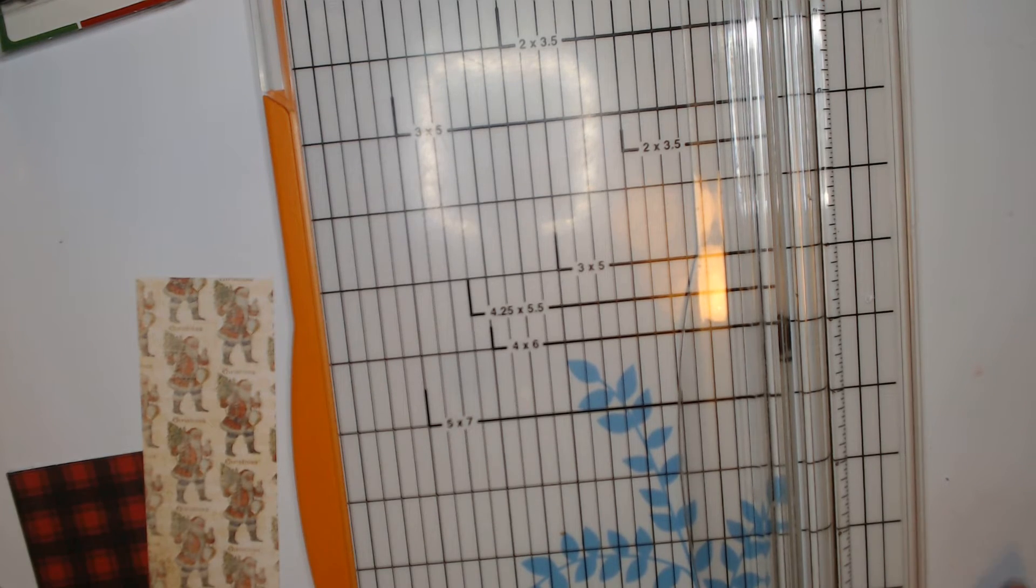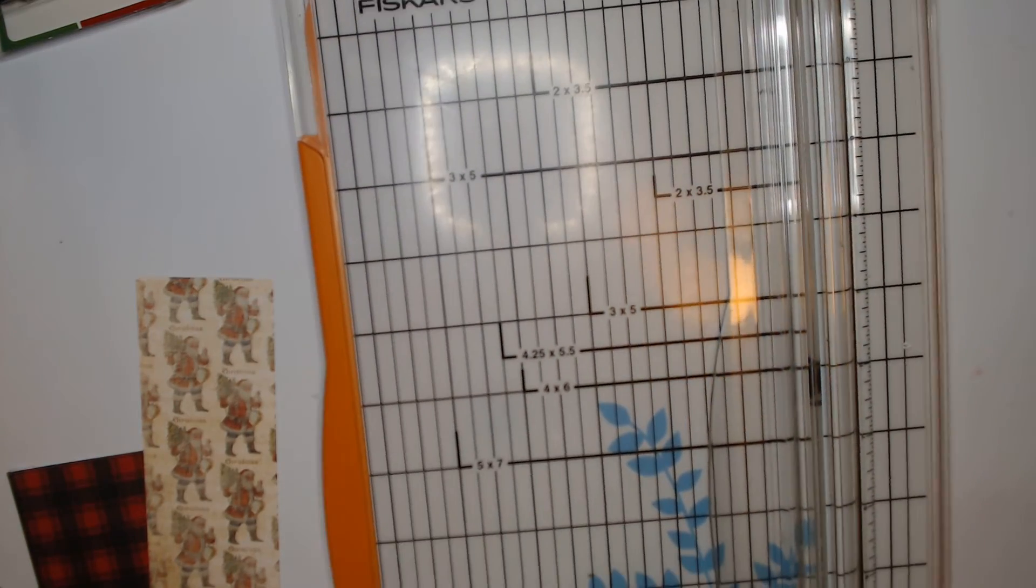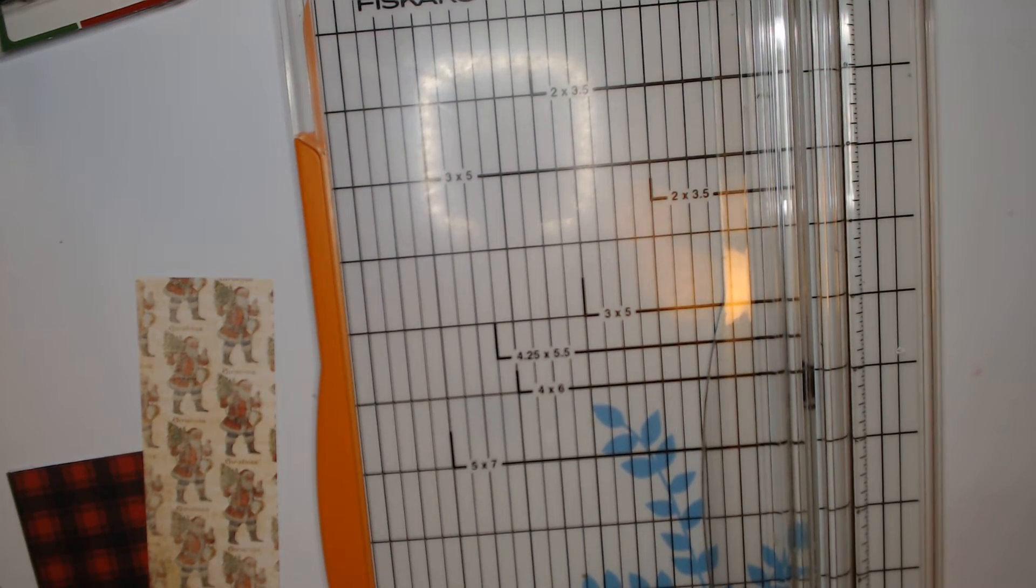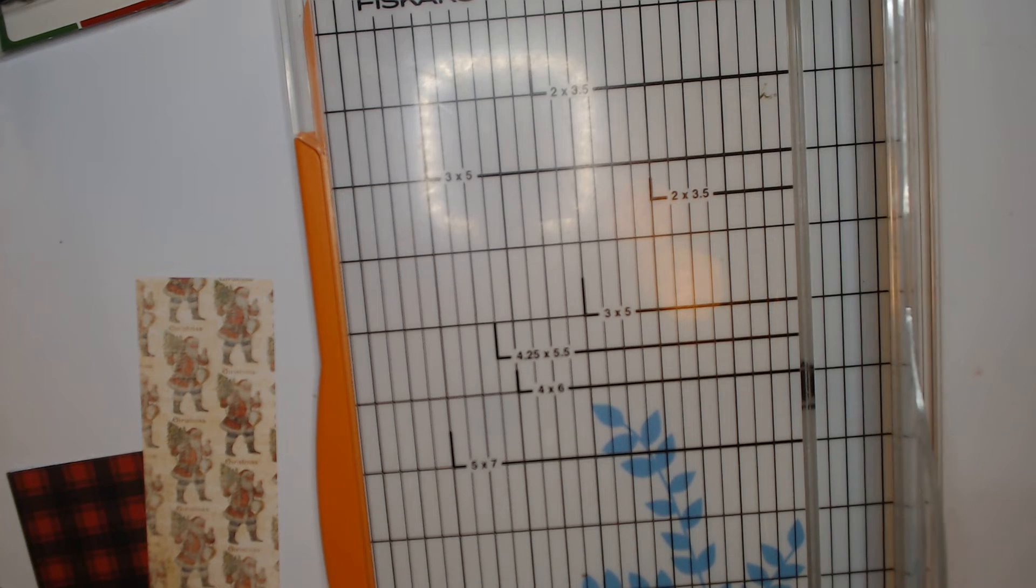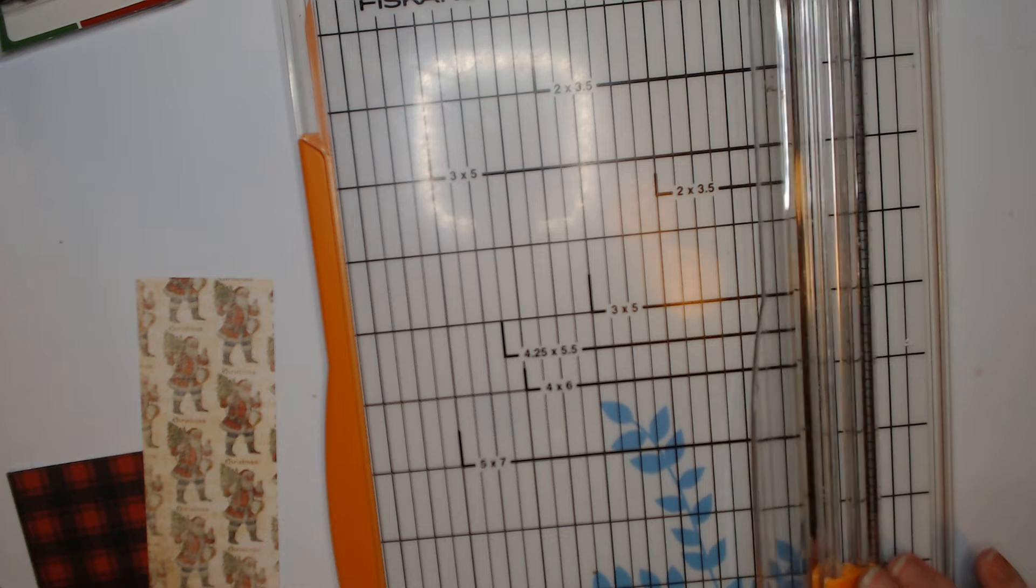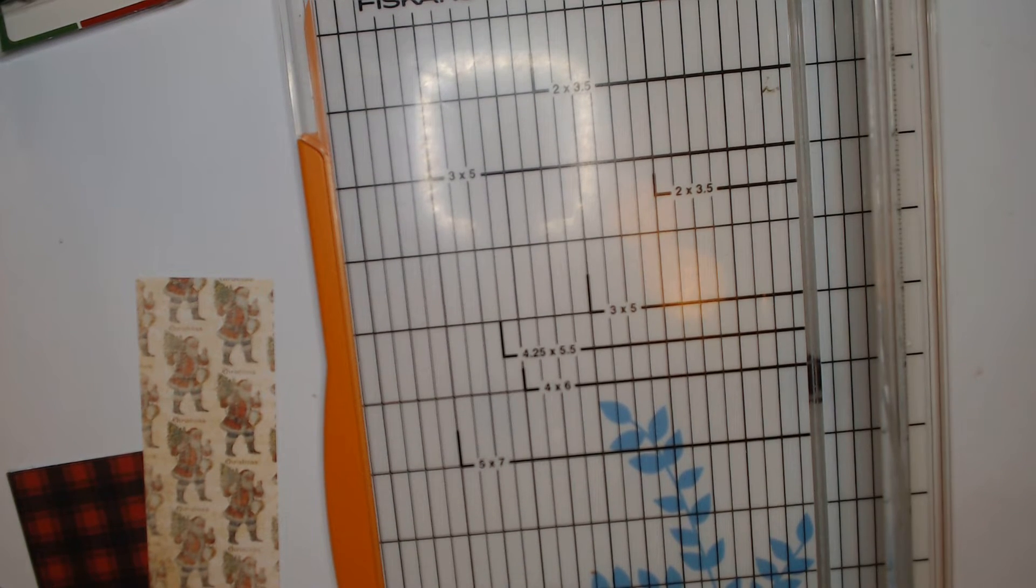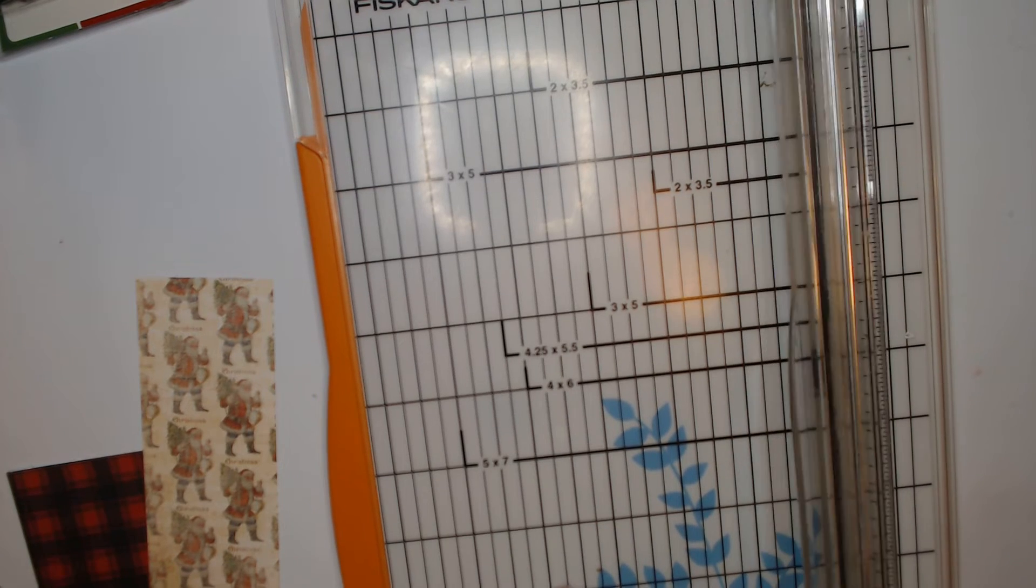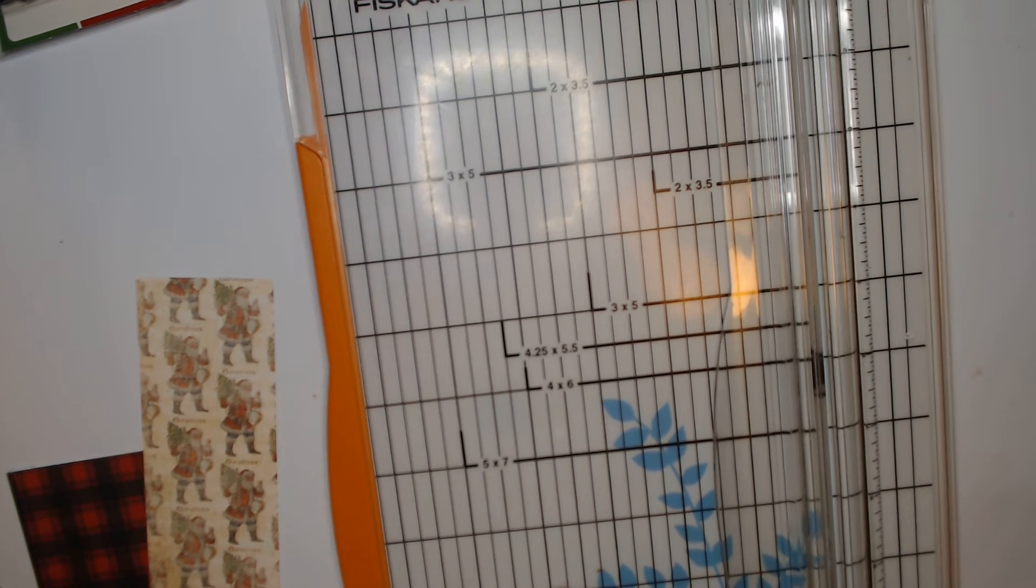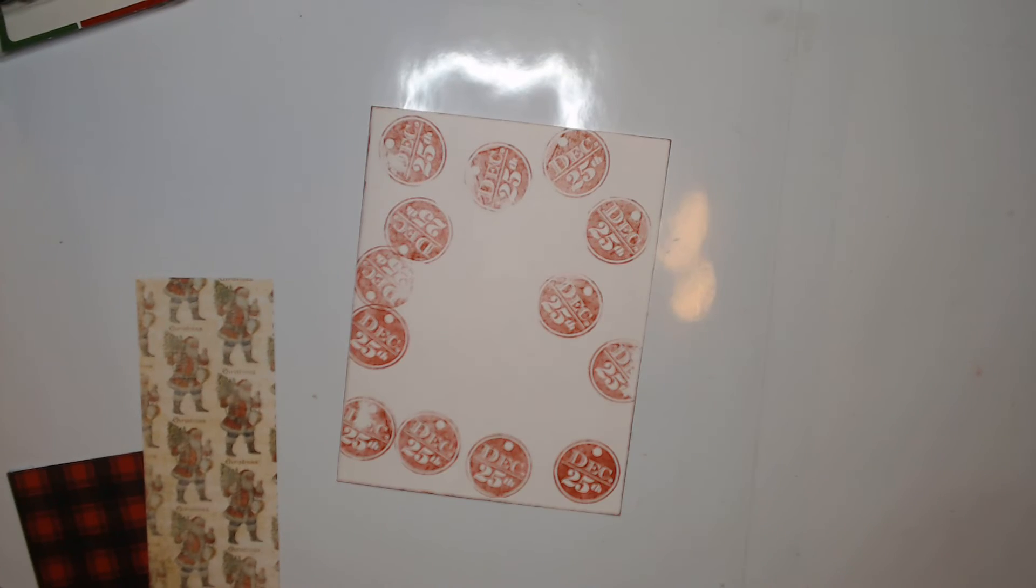Again, you can go on the Facebook page and get measurements or you can just use your scraps. I need to cut down a piece of one and a half by one and three quarters. Line those up.